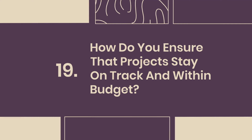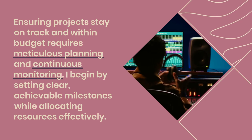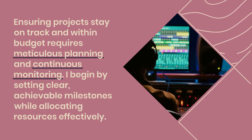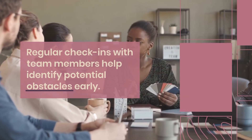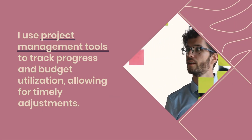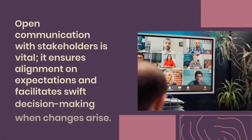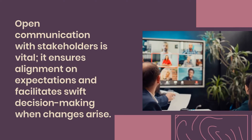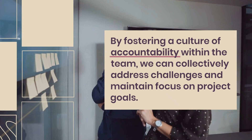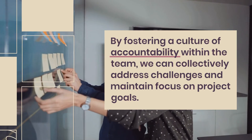Question 19: How do you ensure that projects stay on track and within budget? Ensuring projects stay on track and within budget requires meticulous planning and continuous monitoring. I begin by setting clear, achievable milestones while allocating resources effectively. Regular check-ins with team members help identify potential obstacles early. I use project management tools to track progress and budget utilization, allowing for timely adjustments. Open communication with stakeholders is vital — it ensures alignment on expectations and facilitates swift decision-making when changes arise. By fostering a culture of accountability within the team, we can collectively address challenges and maintain focus on project goals.